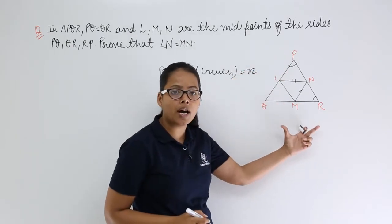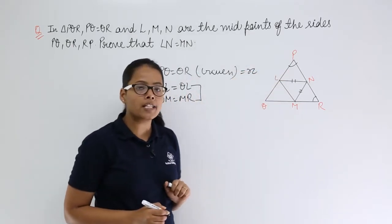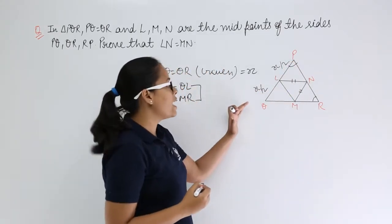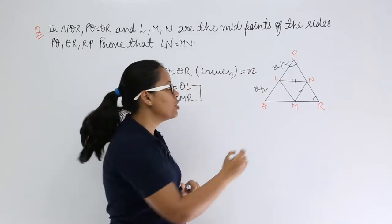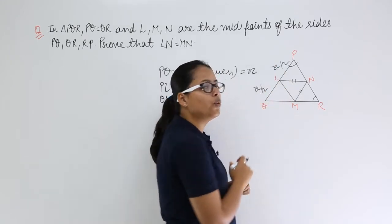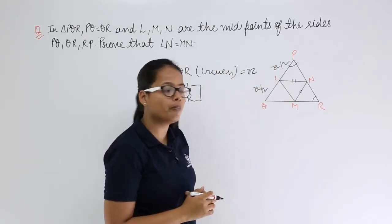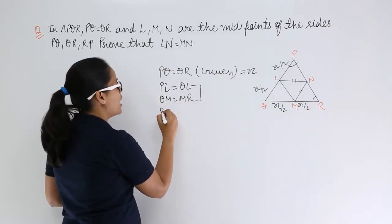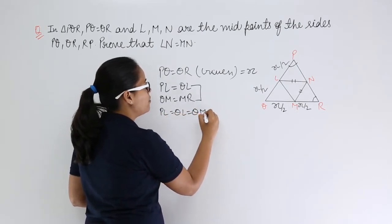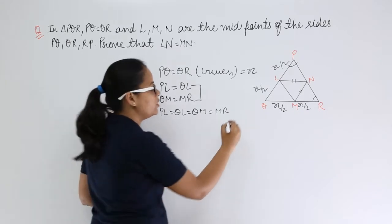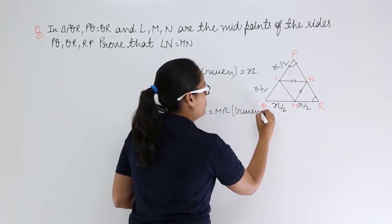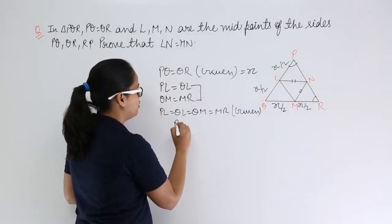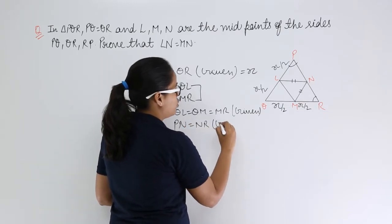Because PQ equals QR and L and M are midpoints, each midpoint divides its side into halves. Since PQ equals X, it becomes X/2 and X/2. Similarly QR also becomes X/2 and X/2. So PL = QL = QM = MR. Also, N is the midpoint of RP, which means PN will equal NR. This is also given.